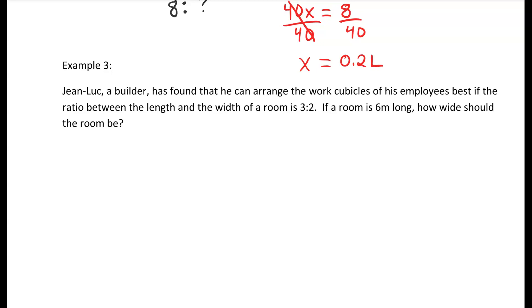For example three, John Luke, a builder, has found that he can arrange the work cubicles of his employees best if the ratio between the length and the width of the room is 3 to 2. If the room is 6 meters long, how wide should the room be? First, we want to think about what are we looking for. We're looking for length to width. The ratio between the length and width is 3 to 2. The room is 6 meters long, and we want to find our width.